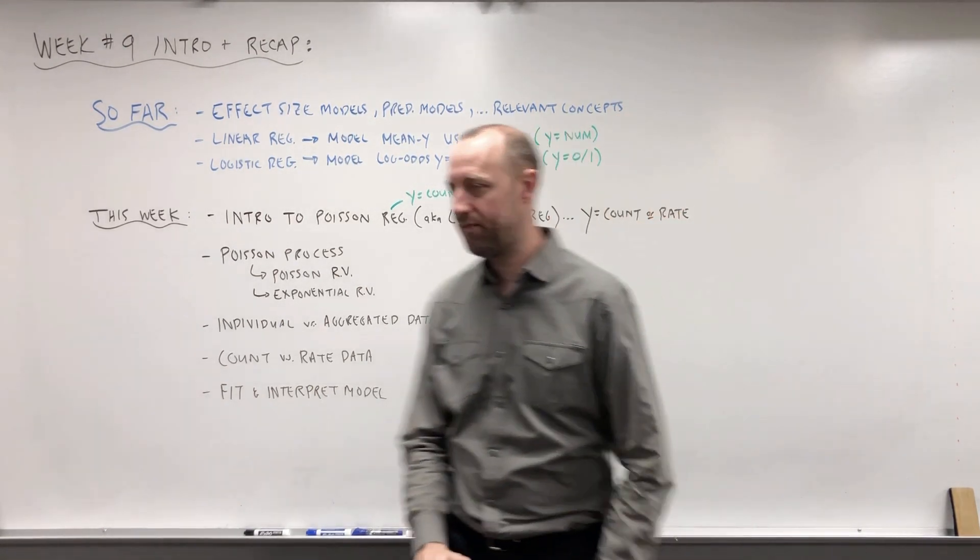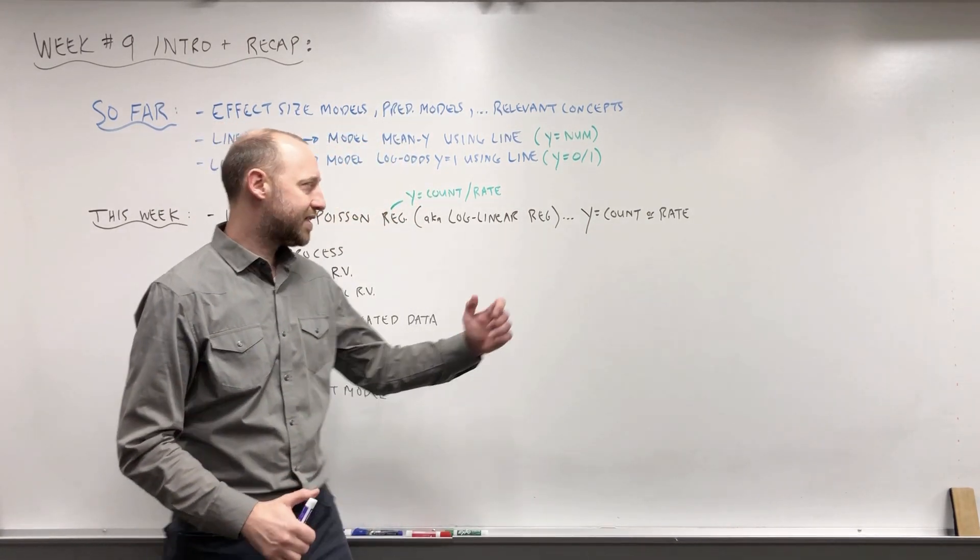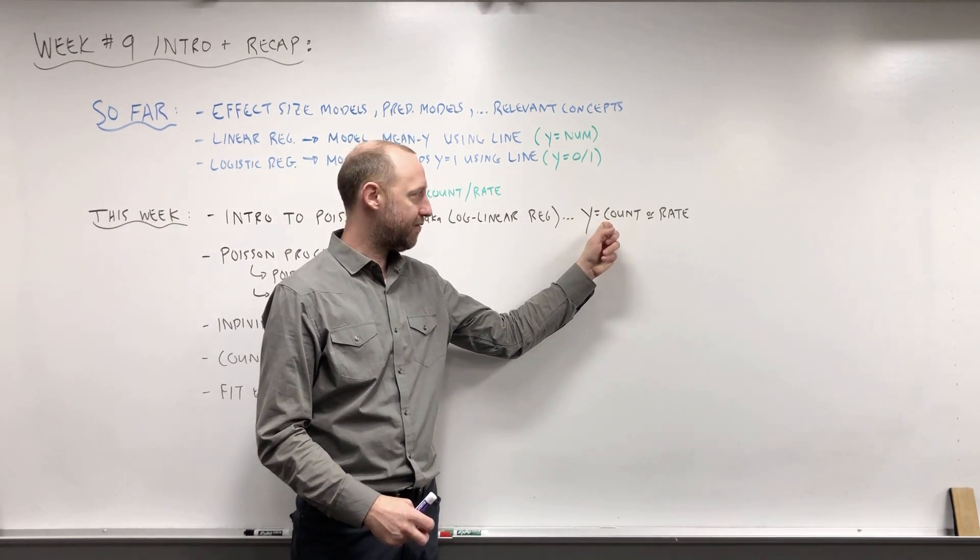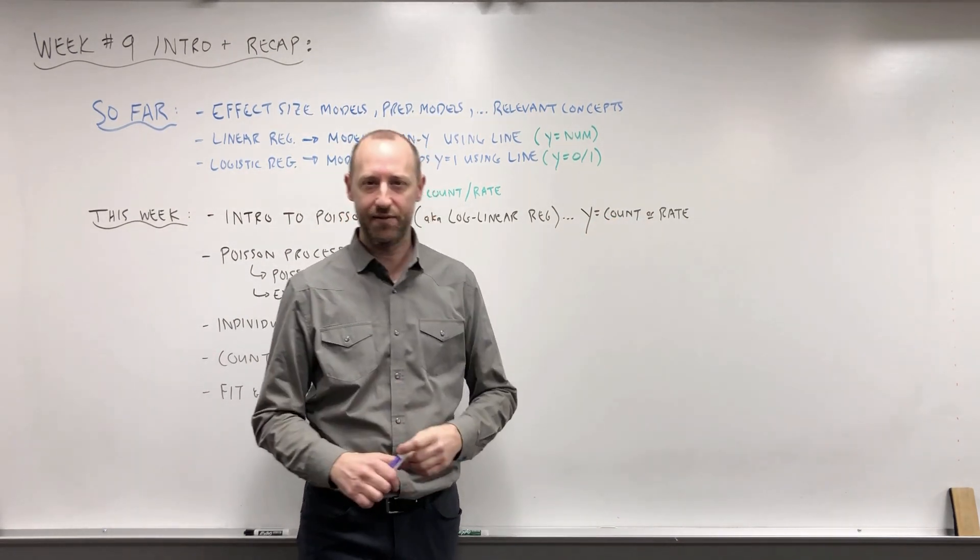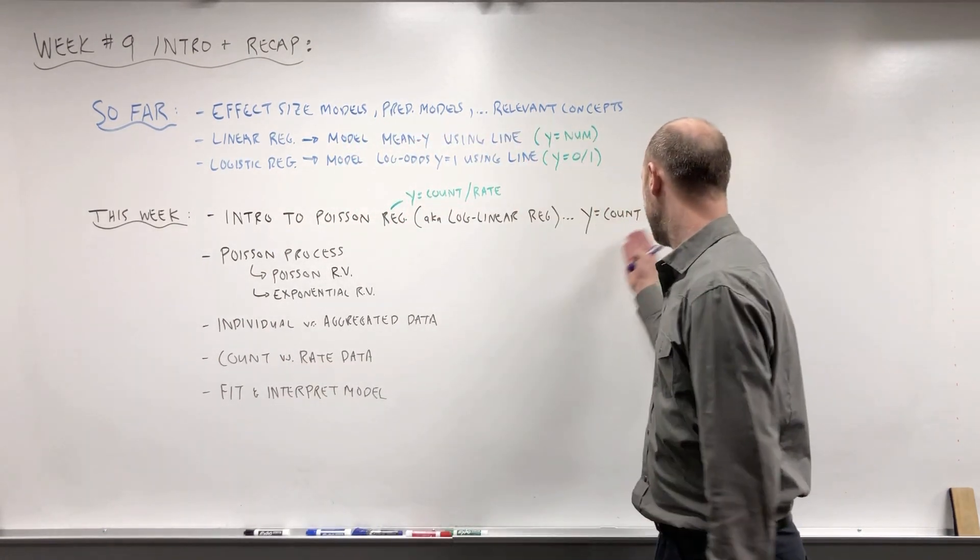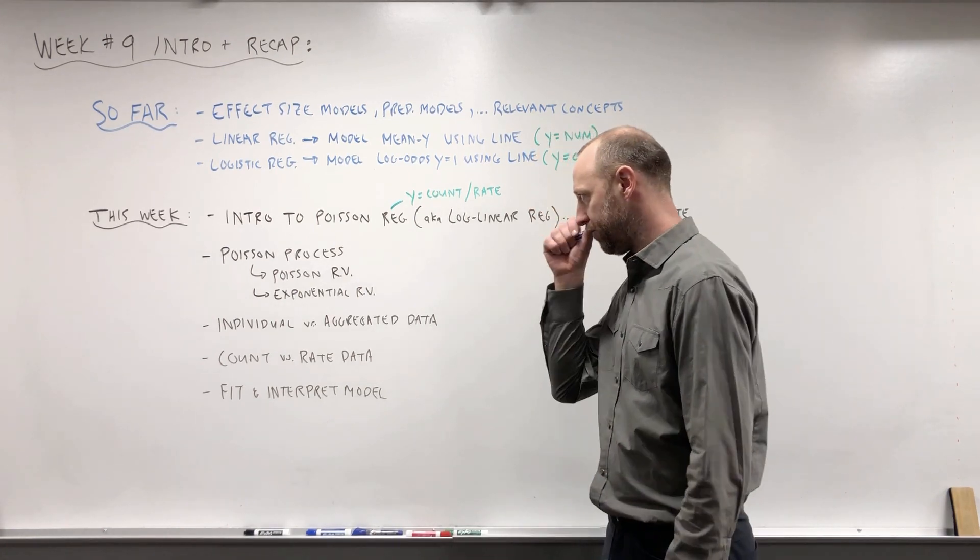And this also goes by the name of log linear regression. And we're going to separate the idea of when we're modeling an outcome that's a count, a number of occurring events, versus a rate, and the slight difference between those two. The model is going to be almost essentially the same. When we're working with rate data, we're going to have to include what we call an offset, and we'll talk about what that is in following videos.